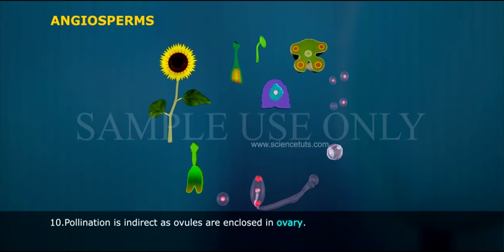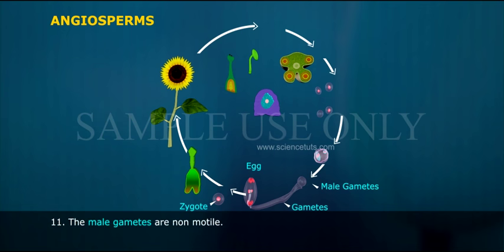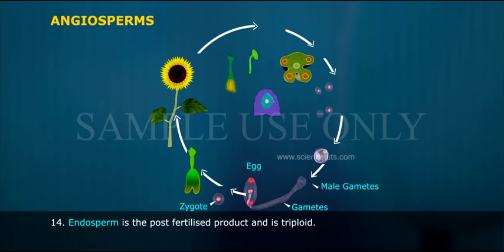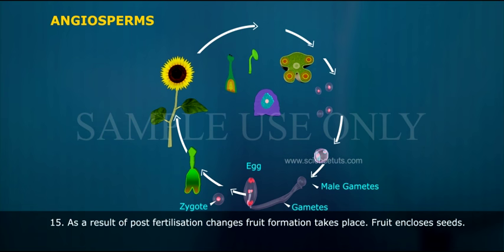The ovules develop into seeds and the ovaries develop into fruit. Pollination is indirect as ovules are enclosed in the ovary. The male gametes are non-motile, and water is not essential for fertilization. Angiosperms are characterized by double fertilization and triple fusion. The endosperm is a post-fertilization product and is triploid. As a result of post-fertilization changes, fruit formation takes place, and the fruit encloses the seeds.